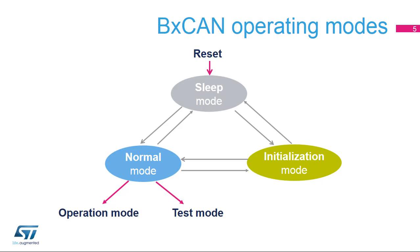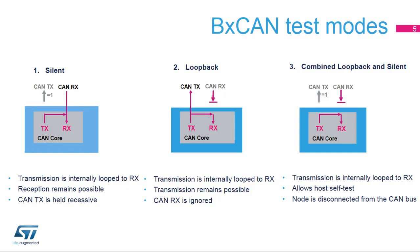When the CAN is in normal mode, the user can select whether to run in operation or test mode. The BX CAN supports three test modes. In silent mode, the BX CAN is able to receive valid frames, but it sends only recessive bits on the CAN bus, and it cannot start a transmission. Silent mode can be used to analyze traffic on a CAN bus without affecting it by the transmission of dominant bits.